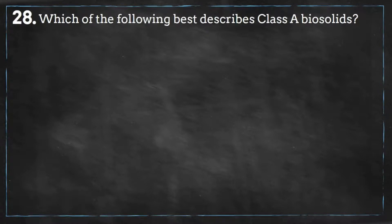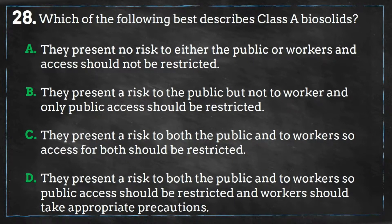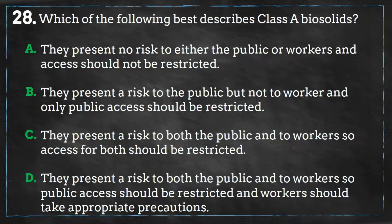Which of the following best describes Class A biosolids? Is it: A) they present no risk to either the public or workers and access should not be restricted; B) they present a risk to the public but not to workers and only public access should be restricted; C) they present a risk to both the public and to workers so access to both should be restricted; or D) they present a risk to both the public and to workers so public access should be restricted and workers should take appropriate precautions.